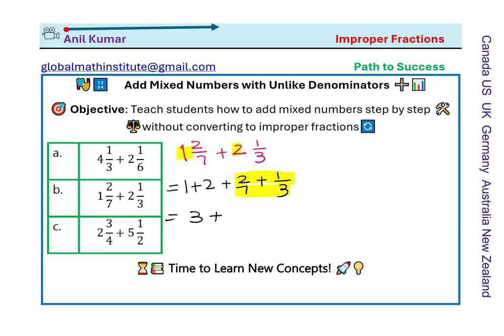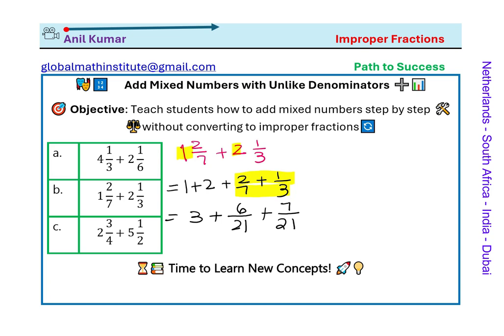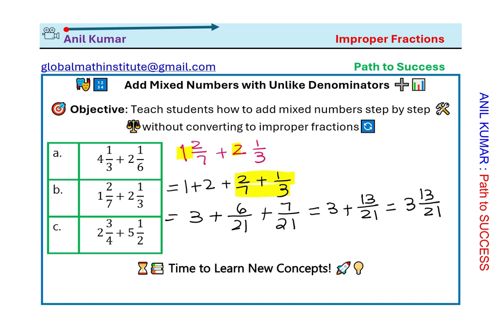Since 3 and 7 are co-prime, we cross-multiply. The common denominator is 3 times 7, which is 21. For 2/7, we multiply by 3, giving numerator 6. For 1/3, we multiply by 7. So we get 3 plus 7 plus 6 — that is 7 plus 6 equals 13 over 21. The answer is 3 and 13/21. We did not complicate the numbers or make them bigger — no conversion to improper fractions.